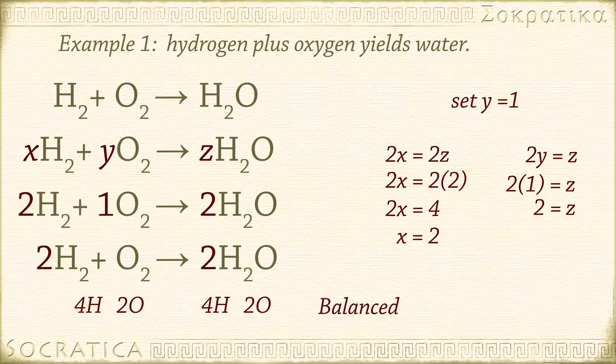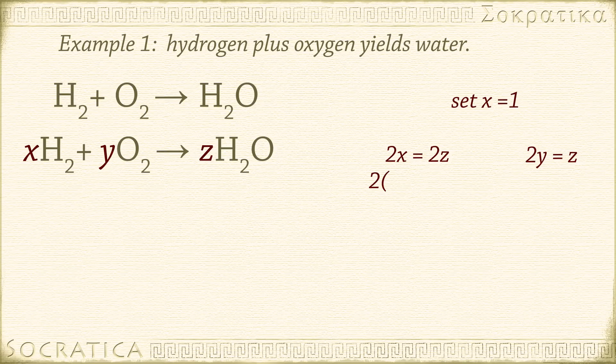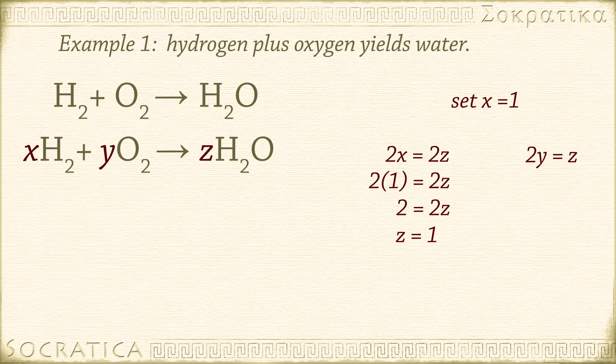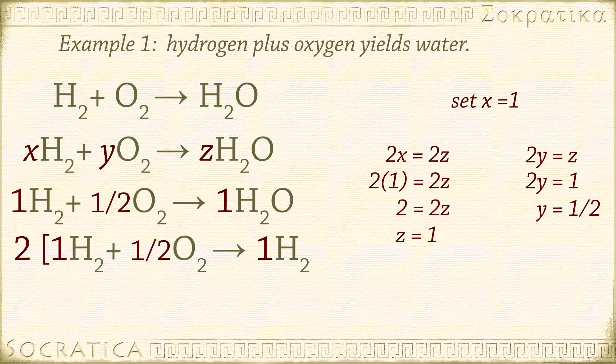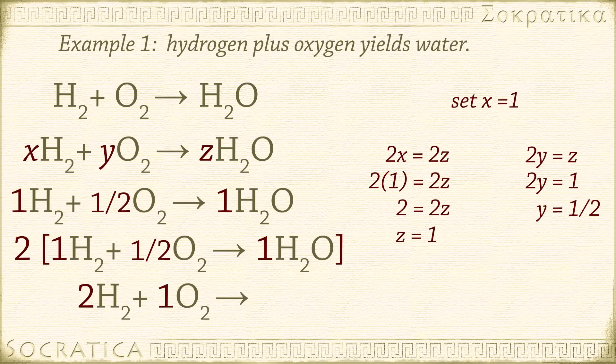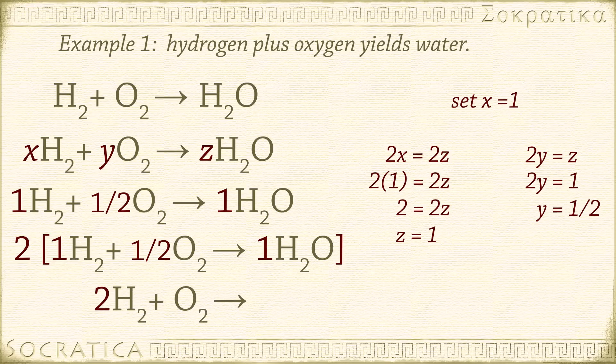I started with one molecule of oxygen gas. What if we start with one molecule of hydrogen gas instead? That means X is 1. 2 times 1 equals 2Z. 2 equals 2Z. Z equals 1. Plug that into the second equation. 2Y equals 1. Y equals 1 half. H2 plus 1 half O2 yields 1H2O. Hmm. Chemists don't like to see fractions as coefficients. That's because it doesn't make a lot of sense to talk about half a molecule or half an atom in a reaction. To get rid of this fraction, multiply everything by 2. 2 times the quantity H2 plus 1 half O2 yields 1H2O gives us 2H2 plus 1 O2 yields 2H2O. Remember, the coefficient of 1 is understood, so we write this as 2H2 plus O2 yields 2H2O.